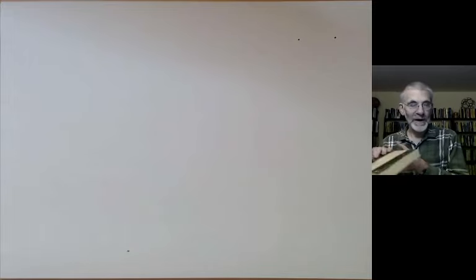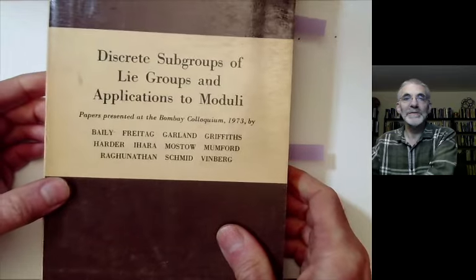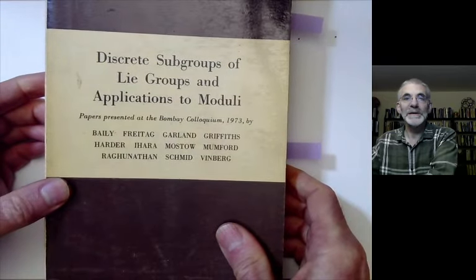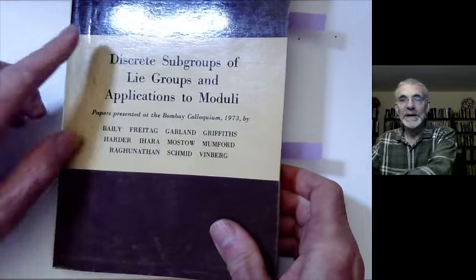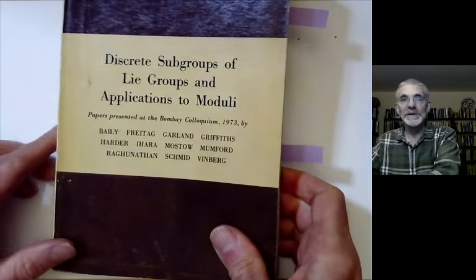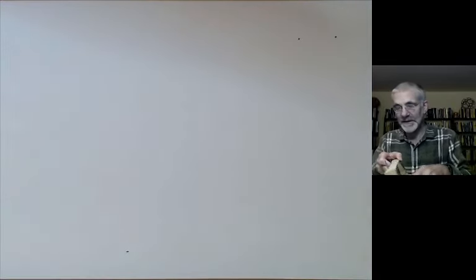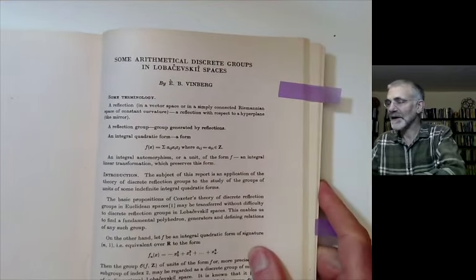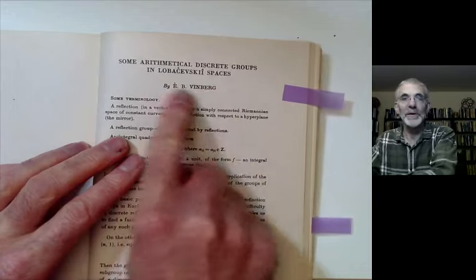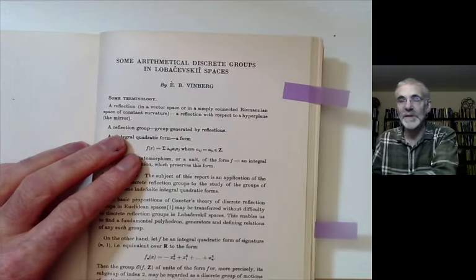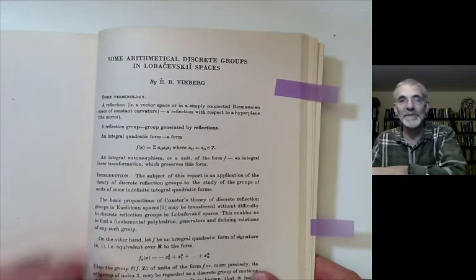Vinberg's paper is one of the papers in this book here — I'll try to put a link to it since you can get it online these days. His paper is on arithmetical discrete groups in Lobachevsky space, and Lobachevsky space is another name for hyperbolic space.